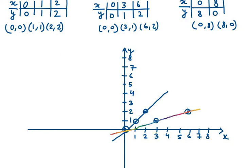For the last equation, (0,8) lies on the y-axis and (8,0) lies on the x-axis. We plot these two points and join them to get the third line.